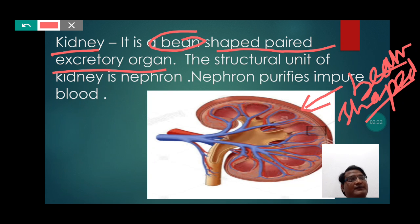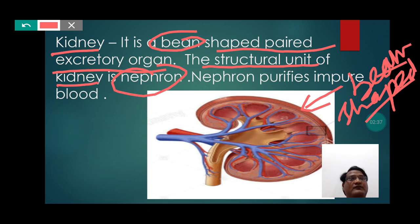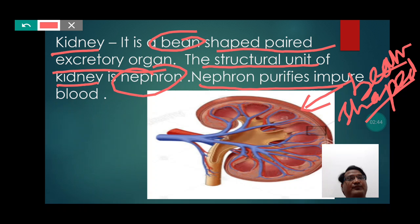The structural unit of the kidney is the nephron, and the main function of the nephron is to purify impure blood.